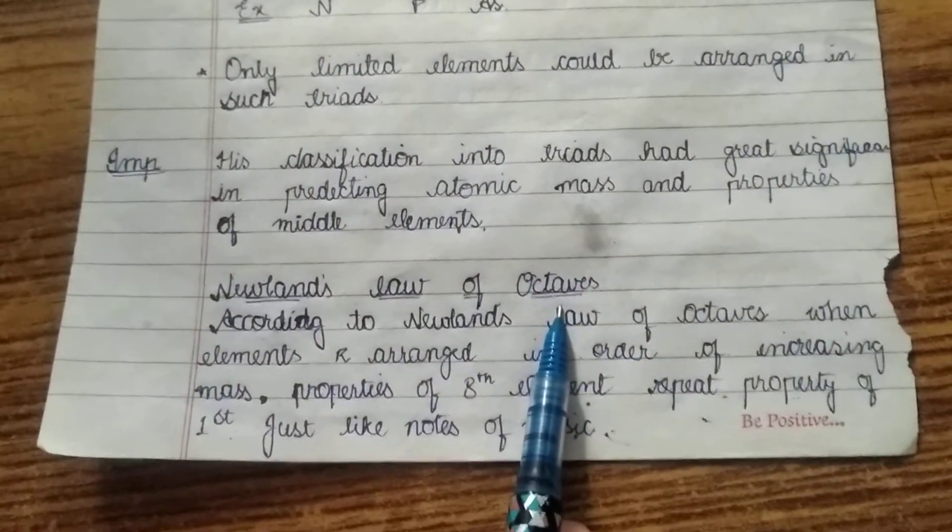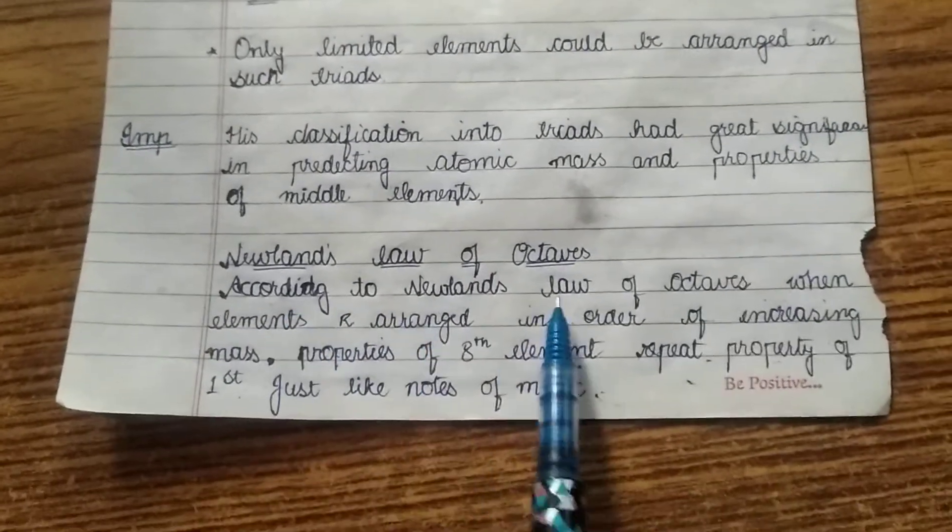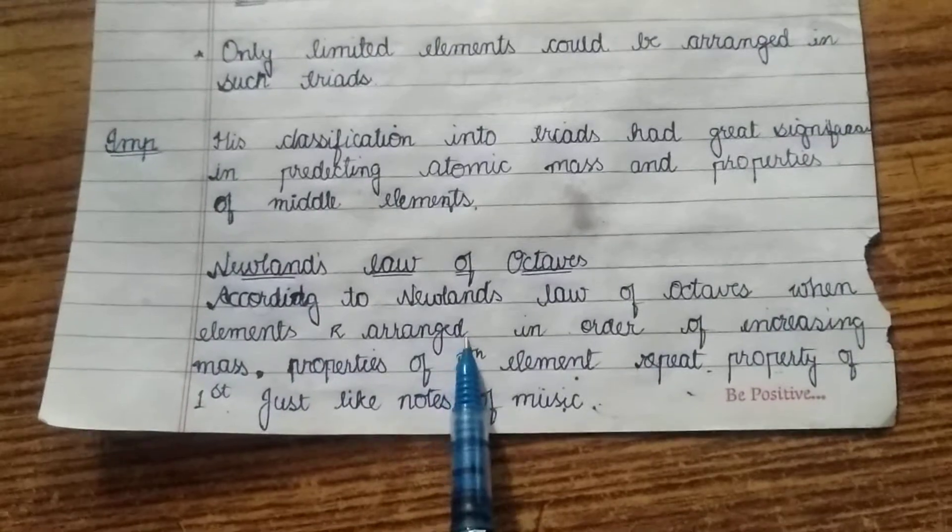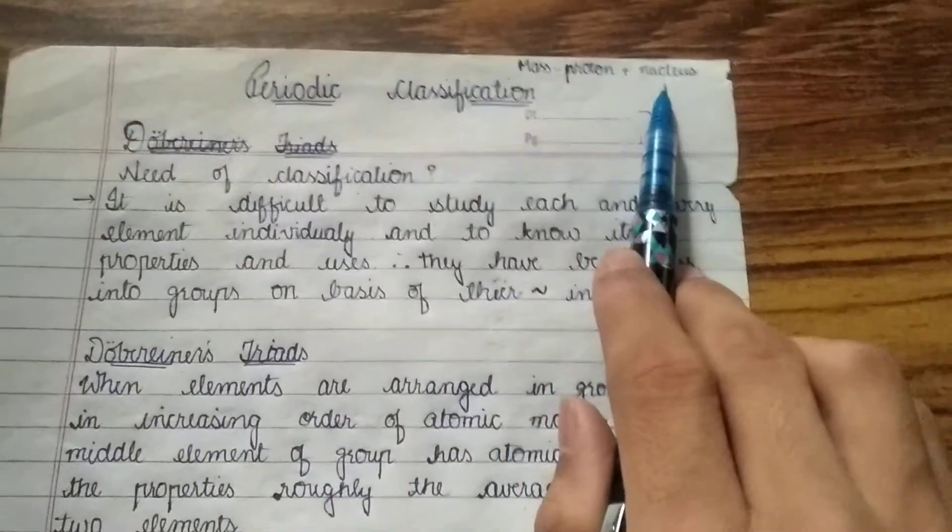Now we will see Newland law of octaves. In this topic also we will see its advantages and limitations. According to Newland law of octaves, when elements are arranged in the order of increasing mass, what do you mean by mass? Mass means the sum of proton and nucleus.